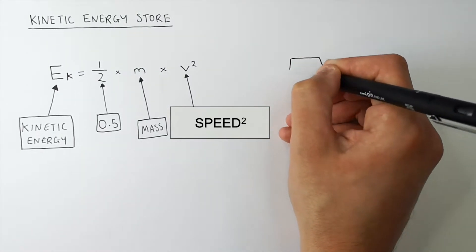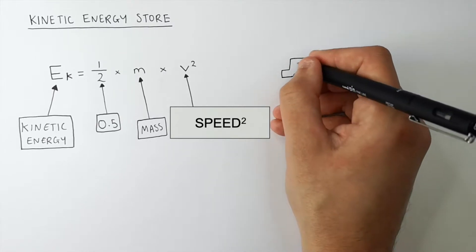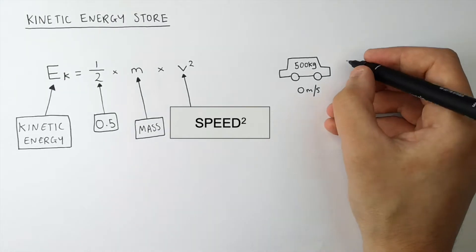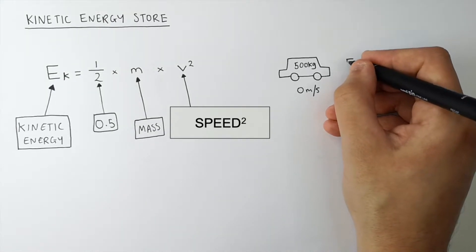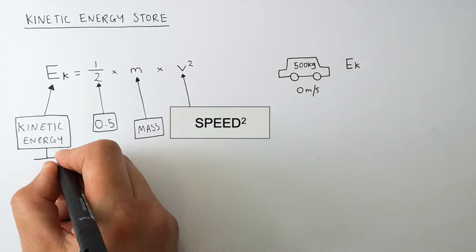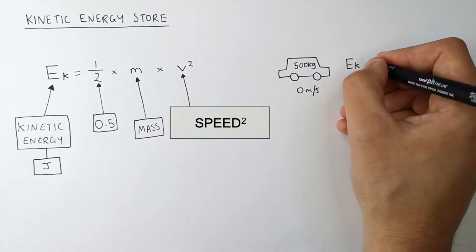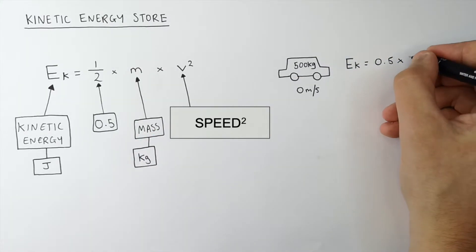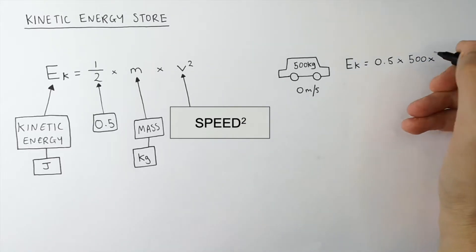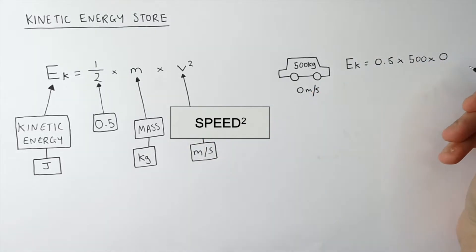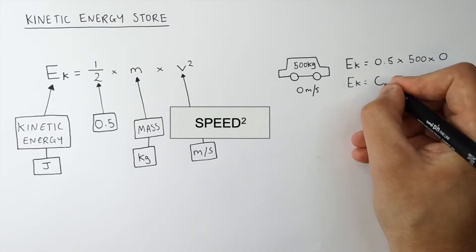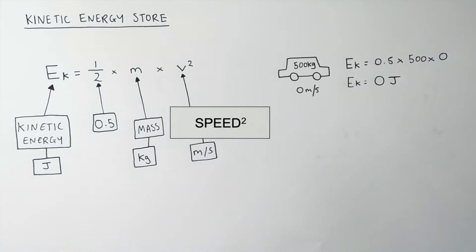In the first worked example, this car has a mass of 500 kilograms and a speed of 0 meters per second — it is stationary. So the energy stored in the car's kinetic energy store is E, in joules, equals 0.5 times 500 kilograms times 0 squared. The car has 0 joules stored in its kinetic energy store because it is stationary and not moving.